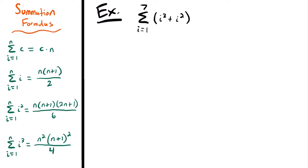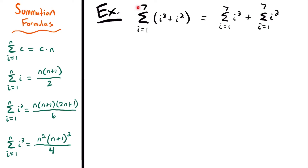Next we have the summation from 1 to 7 of the quantity i cubed plus i squared. To solve this, the first thing we want to do is split up these two terms into two different summations. This will be equal to the summation from i equals 1 to 7 of i cubed, plus the summation from i equals 1 to 7 of i squared. When you have a quantity like this that you are summing, you can split it into two separate sums with the same bounds.